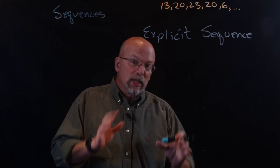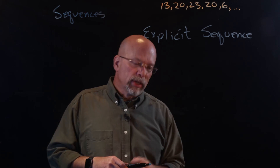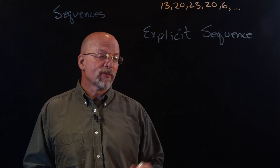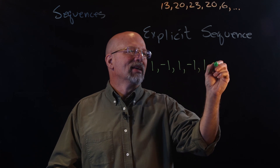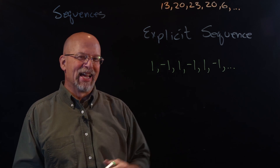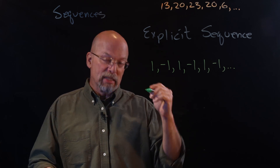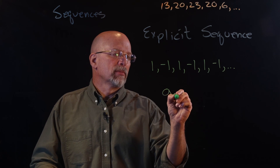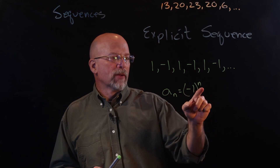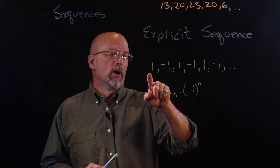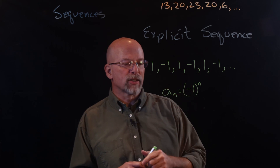An explicit sequence means I can develop a generic formula for the nth element that depends only on n. For example, the sequence one, negative one, one, negative one, one, negative one — a sub n is equal to negative one to the nth. When n equals zero, negative one to the zero is one; negative one to the one is negative one; negative one squared is positive one, and so forth.